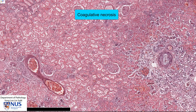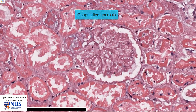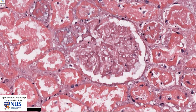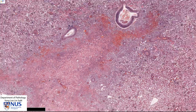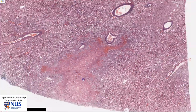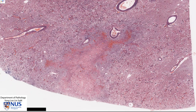We see the same picture also in the glomeruli. For example, here we can see the nuclei are almost entirely gone, but we still have some outlines of the capillary loops. So the pathologic process here is coagulative necrosis, and the diagnosis is a renal infarct. We have this wedge-shaped area of infarcted tissue.